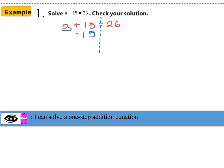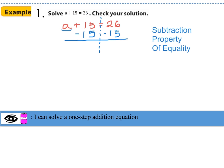Right now my equation is not balanced, so we have to subtract 15 on the other side as well to keep our equation balanced. This is an example of the subtraction property of equality. On the left side, 15 minus 15 goes away and we can drop down a. Now a has been isolated, and on the right-hand side, 26 minus 15 gives us 11. So the value of a is equal to 11.